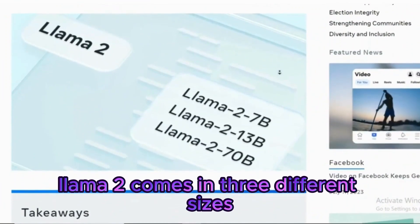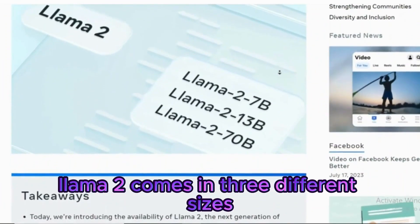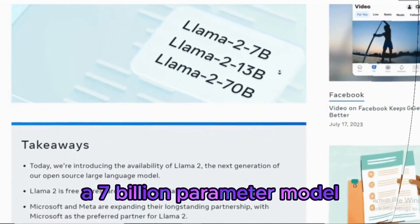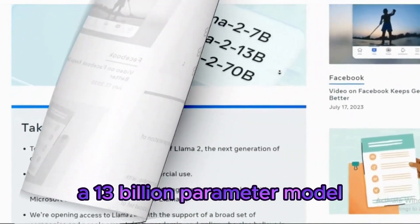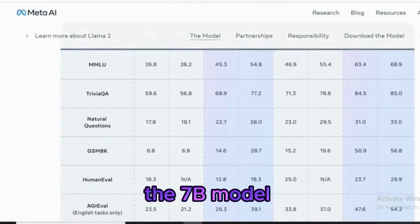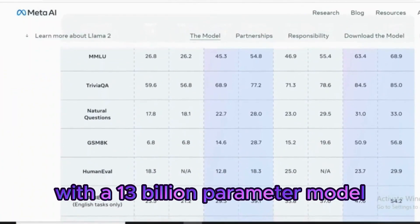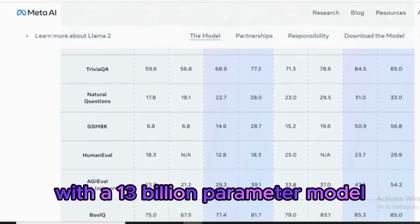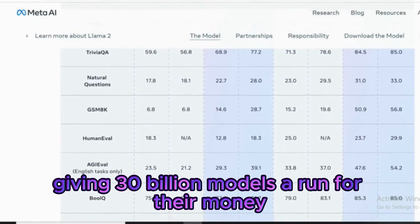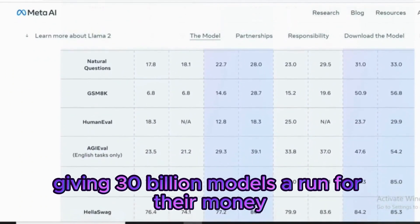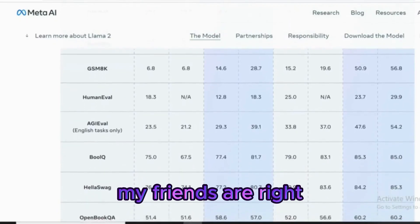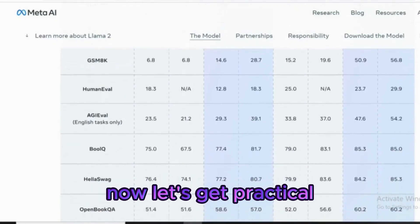LLAMA 2 comes in three different sizes: a 7 billion parameter model and a 13 billion parameter model. The 7B model is on par with a 13 billion parameter model, and the 13B model is giving 30 billion models a run for their money. That's some serious power. Let's get practical.